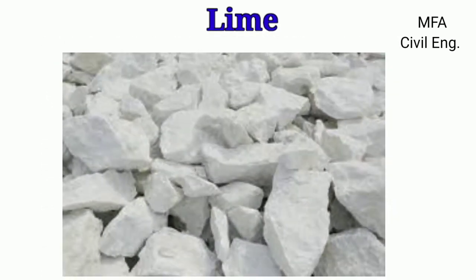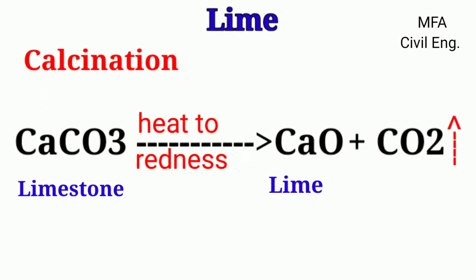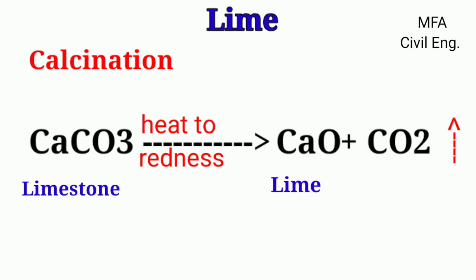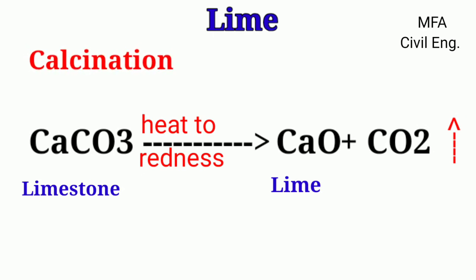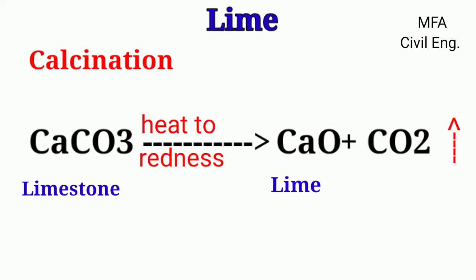Hello everyone, my name is Fazal and you are watching MFA Civil Engineering. Lime is obtained from limestone when the moisture and carbon dioxide are removed by the process of calcination. The product which remains is lime. The chemical formula of lime is calcium oxide, that is CaO.